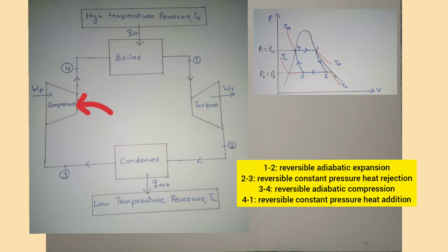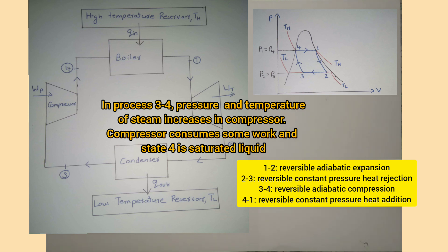Now steam flows through the compressor, where the pressure of steam increases. Temperature also increases from TL to TH. It is shown in the PV diagram by process 3 to 4. It is a reversible adiabatic process, and state 4 is saturated liquid state, which means all molecules are in liquid state.